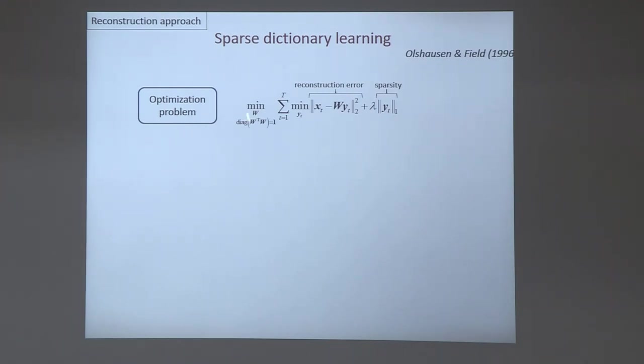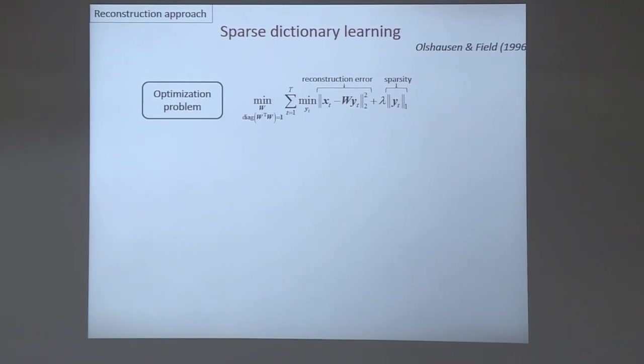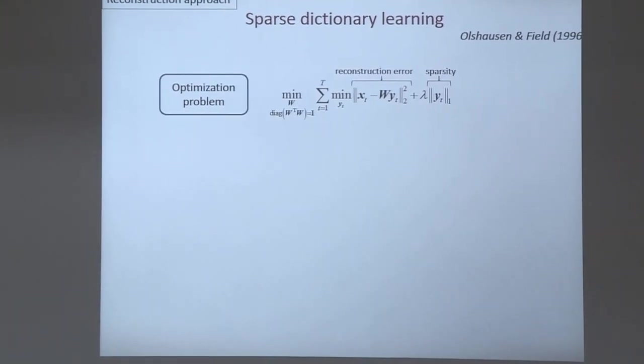We optimize this with respect to Y for all time points T, and find an optimal time-independent W. But this is the offline setting — when you have the whole data set with all X_Ts and want to find all Y_Ts and W. The brain doesn't have access to the whole data set, because sensory stimuli are streamed by sensory organs one at a time sequentially, and the brain has to compute the output to produce behavior on the fly. That's the online or streaming setting.